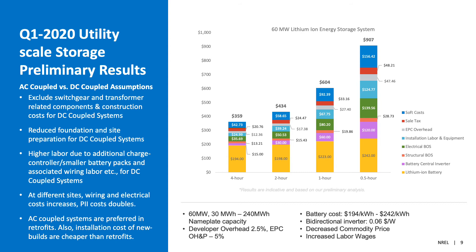It also increases the electrical work since the projects are literally happening in two separate sites. Although DC systems have better round-trip efficiency compared to AC-coupled systems, when it comes to retrofitting projects or projects that require a simplified installation setup, AC-coupled systems tend to cost a little bit less than DC-coupled systems, even with the necessity for an additional bidirectional inverter.